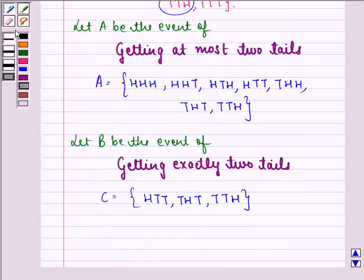So the sample space for the event B will be HTT, THT, and TTH.